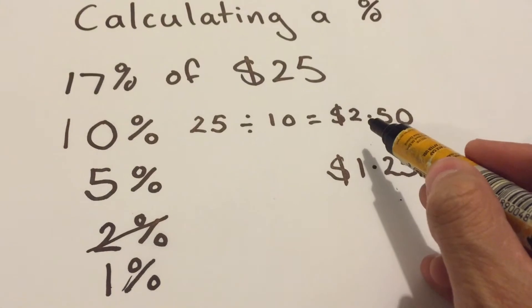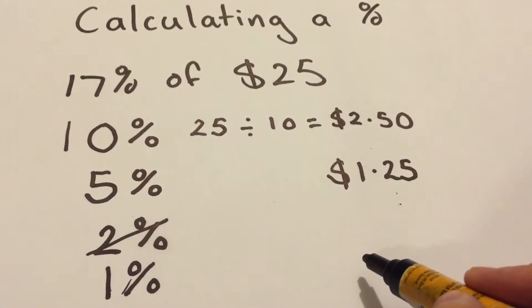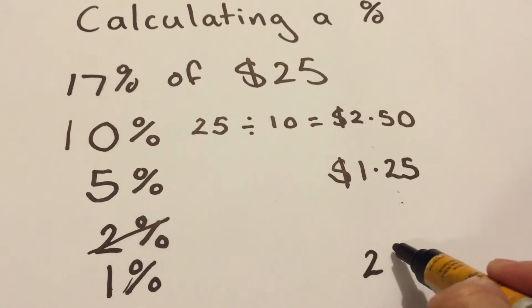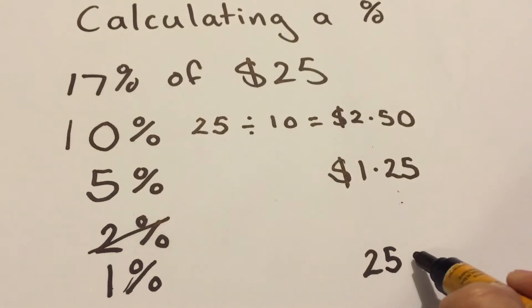So 1% is just dividing that by another 10. And here's what you're going to get: 25 cents.